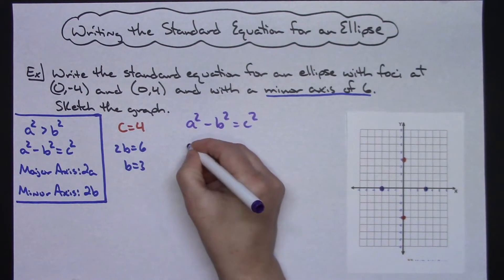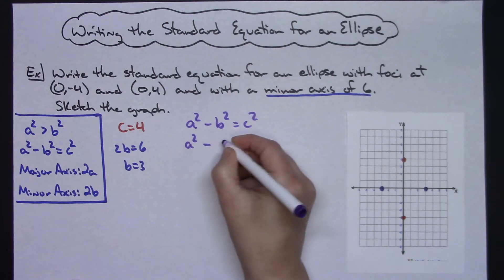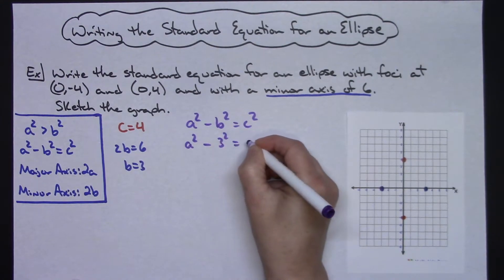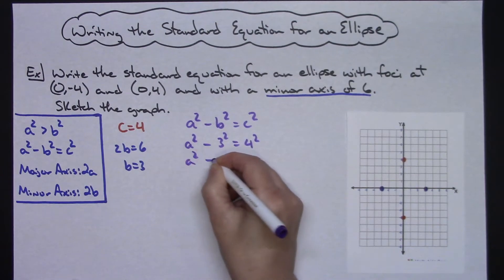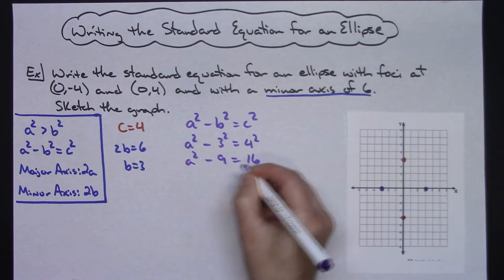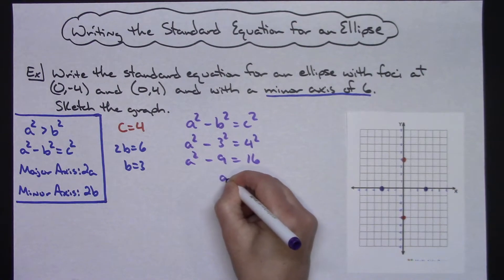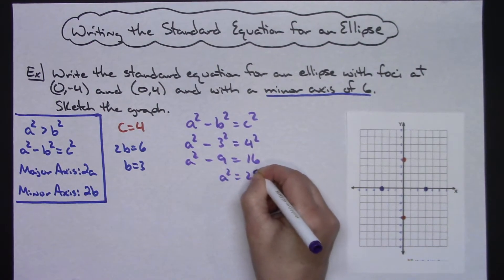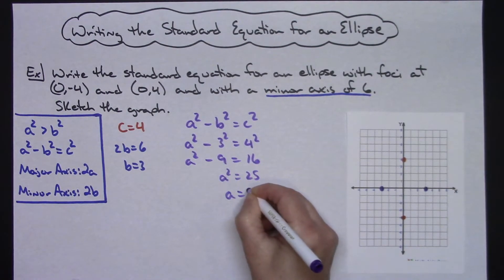So A squared minus B squared equals C squared. So I can plug in everything I know. I'm trying to solve for A. My B is 3 and my C is 4. So A squared minus 9 equals 16. Add 9 to both sides. A squared equals 25. So then A has to equal 5.